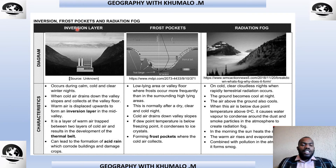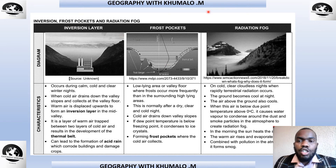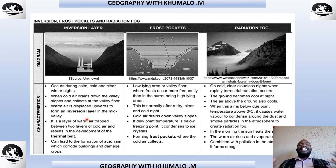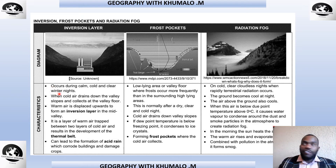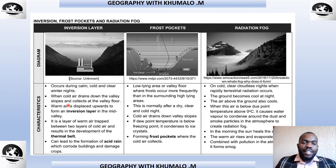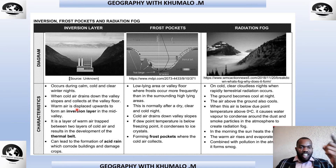Grade 12s, you must understand the inversion layer, the frost pocket, and radiation fog. Let's look at the characteristics of an inversion layer. It occurs during calm, cold, and clear winter nights. When cold air drains down the valley slopes and collects at the valley floor, the inversion layer forms. Warm air is displaced upward to form an inversion layer in the middle of the valley.